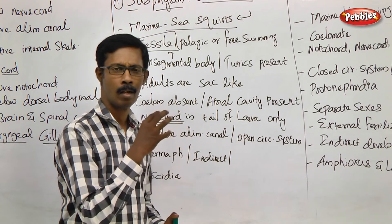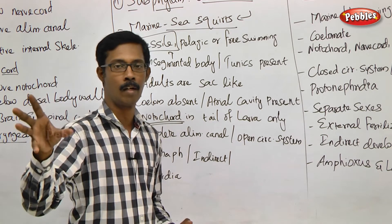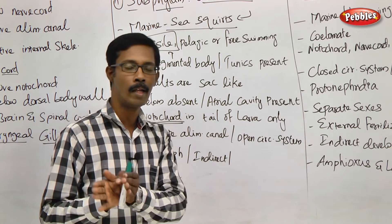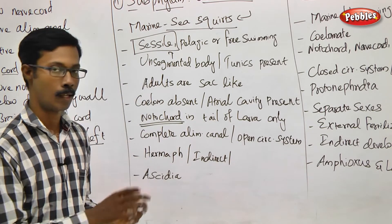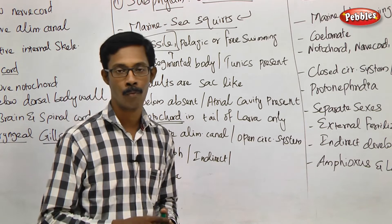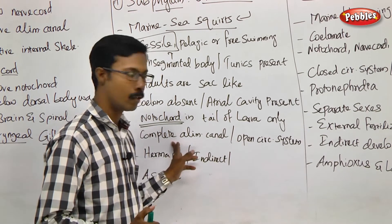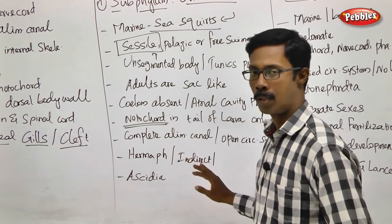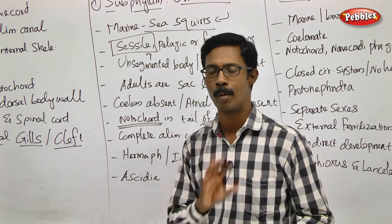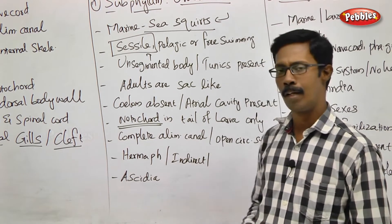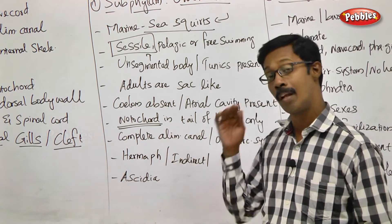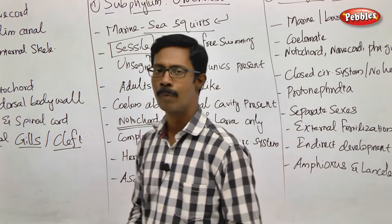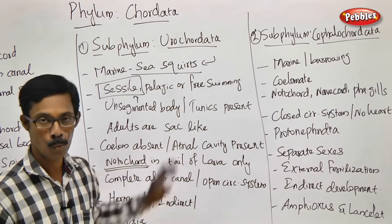This is why Urochordata is placed in phylum chordata — because of the notochord in the larval stage. The notochord is not present in the entire life period of the adult, but only in the larval tail region. The alimentary canal is complete. The circulatory system is an open circulatory system. Normally they are hermaphrodites — both male and female are present in the same individual. Development is indirect, with larval stages. The common example is Ascidia.